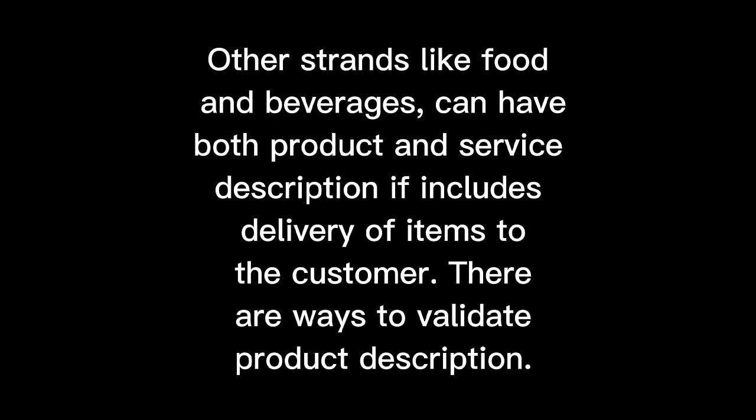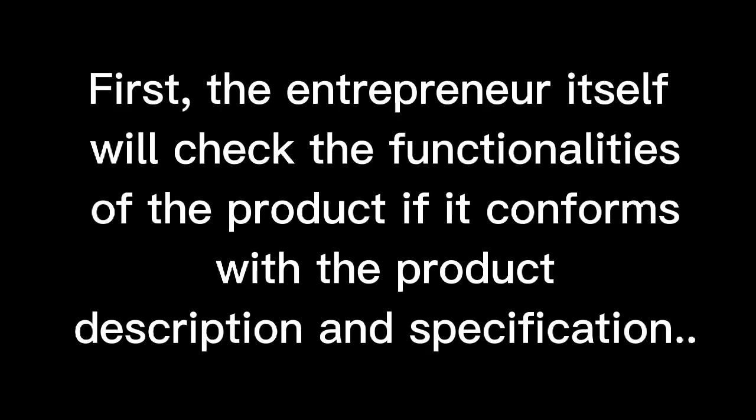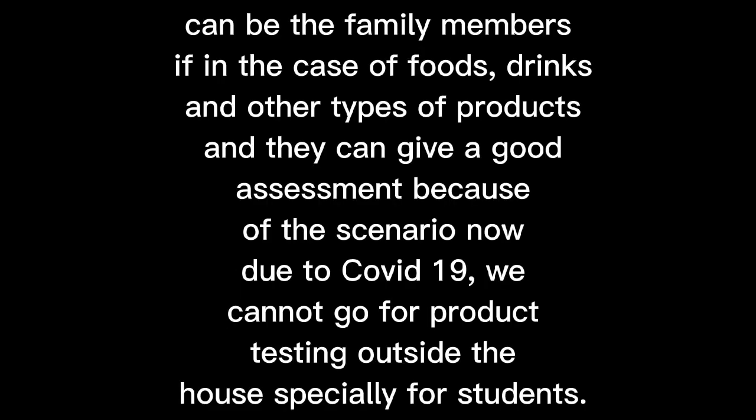There are ways to validate a product description. First, the entrepreneur will check the functionalities of the product to see if it conforms with the product description and specification. This can also be done by family members — in the case of foods, drinks, and other types of products, they can give a good assessment.